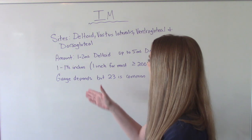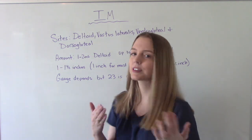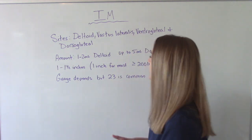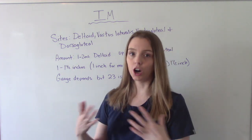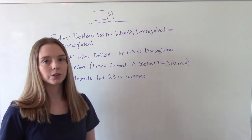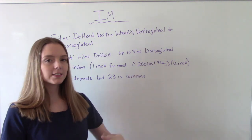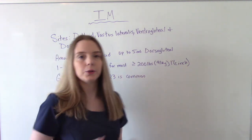The amount we give depends on the site. The most common site is the deltoid, where we give anywhere between 1 and 2 mLs. If we have to give a larger volume, you can give up to 5 mLs in the dorsal gluteal. So if you have to give more than 2 mLs, you don't want to do it in the deltoid, you want to do it in their bottom.